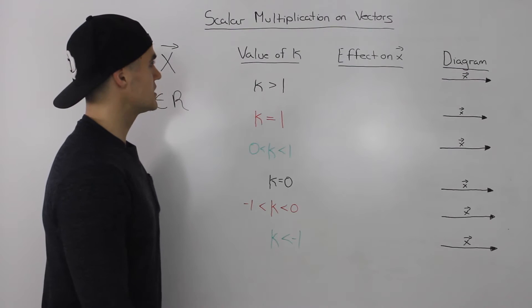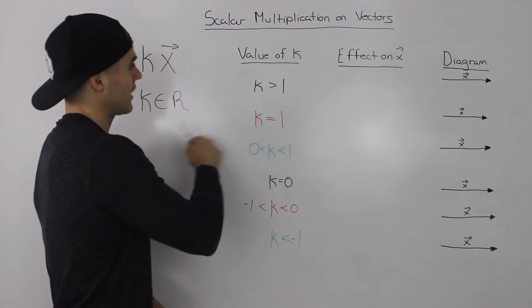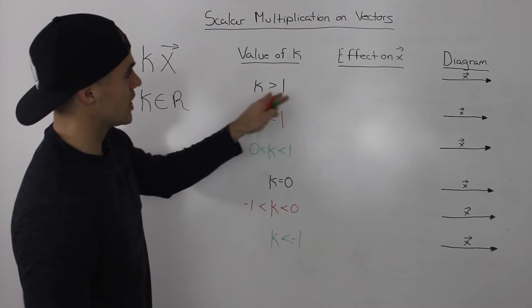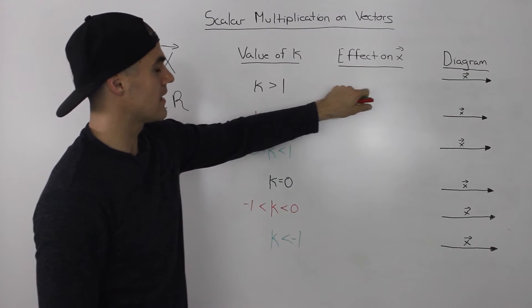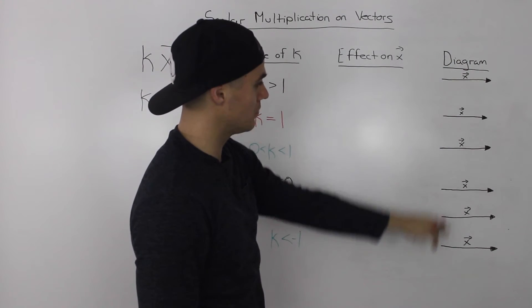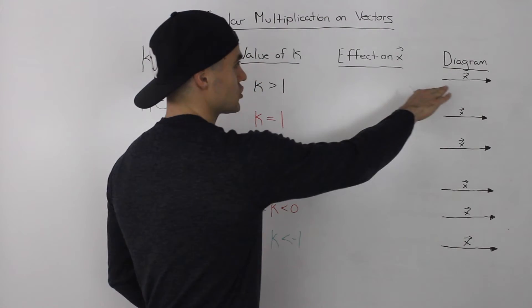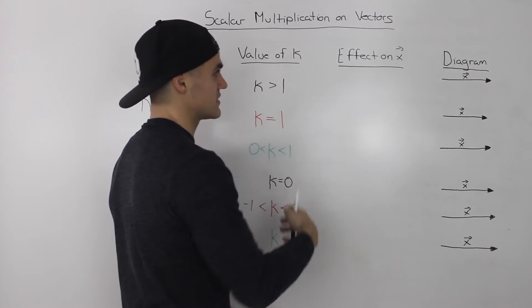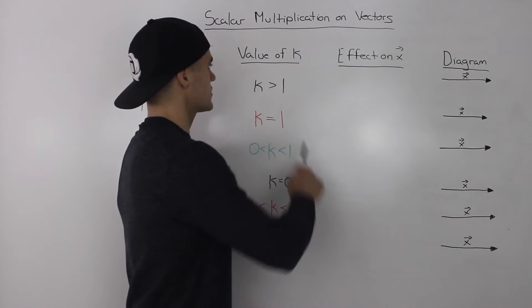So to discuss the effects on the vector x, when we multiply it by scalar k, I'm going to go through six different cases. And for each case, I'm going to describe what happens to the vector x, and then I'm going to show it in a diagram. So I have these vectors, these should all be the same vectors, same magnitude, same length. And under each one of them, for each case, I'm going to show how the effect of the scalar looks like in a diagram.